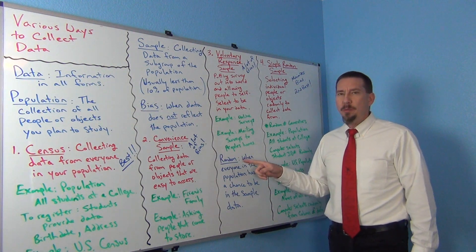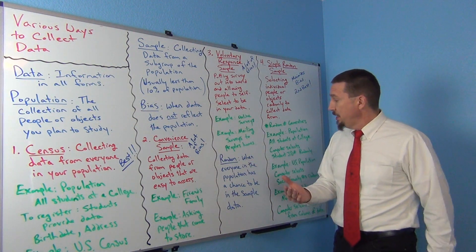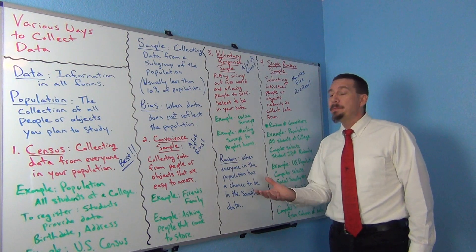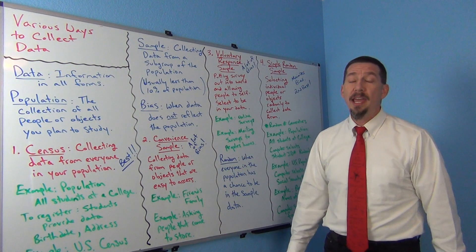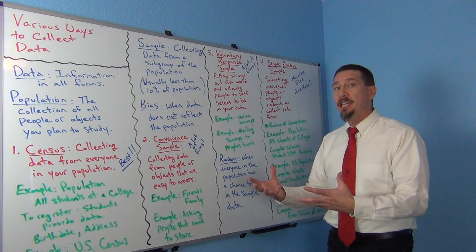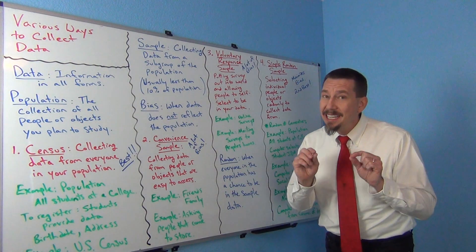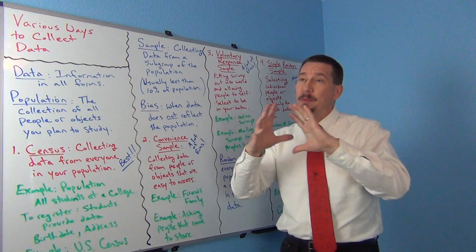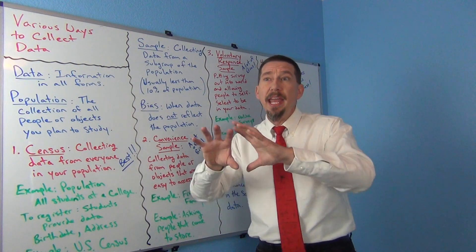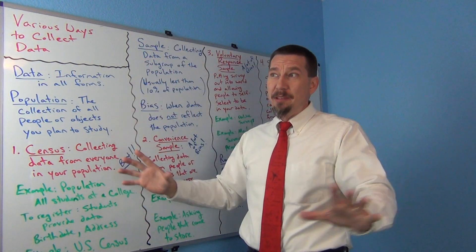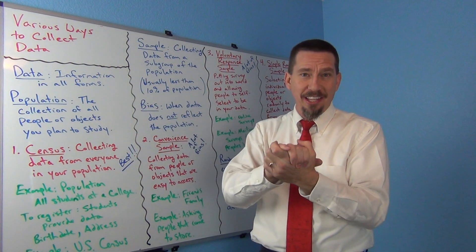In statistics, when we say we have a random sample, that's when everyone in the population has a chance to be in your sample. So everyone in the population could be in your sample. I'm still taking a sample — collecting data from, let's say, 300 people — but every one of the millions of people in my population had a chance to be one of those 300.